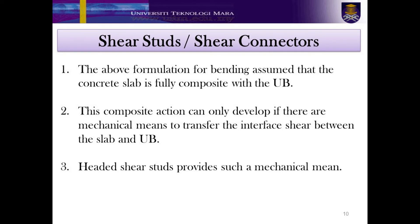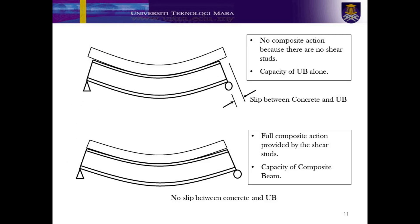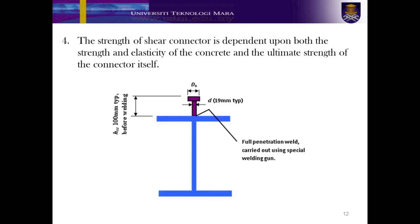Once the bending and shear capacity have been calculated, the next step is to design the shear stud. The previously shown formulation assumes that the concrete slab is fully composite with the universal beam. The shear stud is designed to create composite action and acts as a mechanical means to transfer the interface shear between the slab and UB. If no shear stud is provided, slip between the concrete and UB will occur, as shown in the top figure. The use of shear studs will provide full composite action, hence preventing slip between the steel and concrete slab. The strength of the shear connector is dependent upon both the strength and elasticity of the concrete and the ultimate strength of the connector itself.